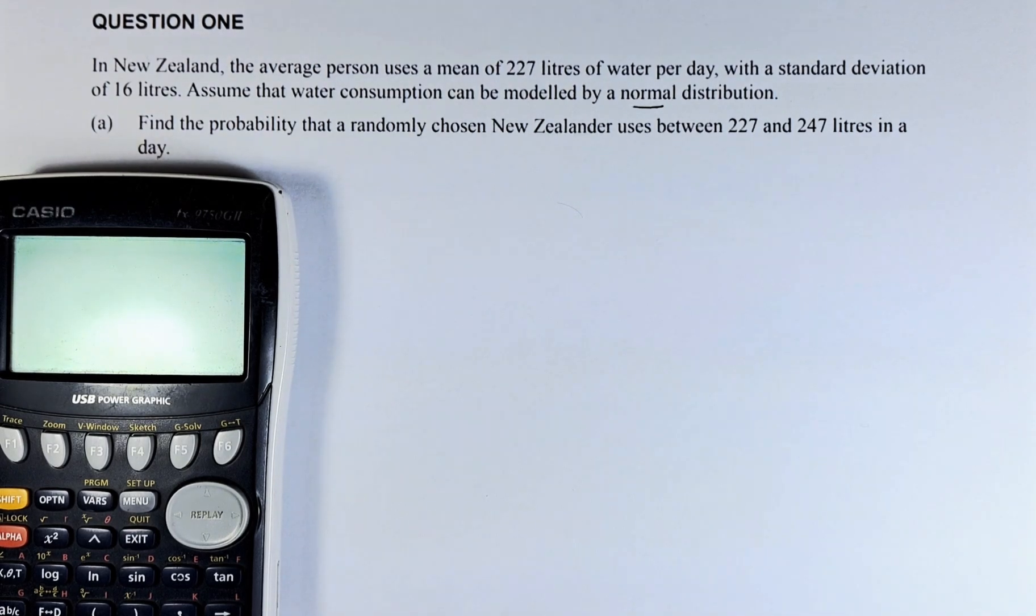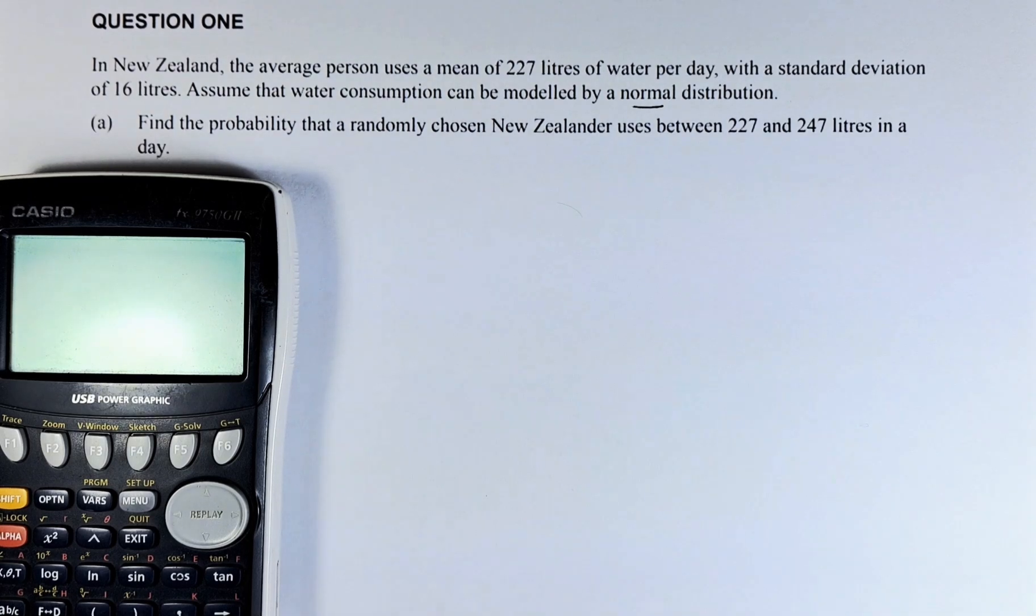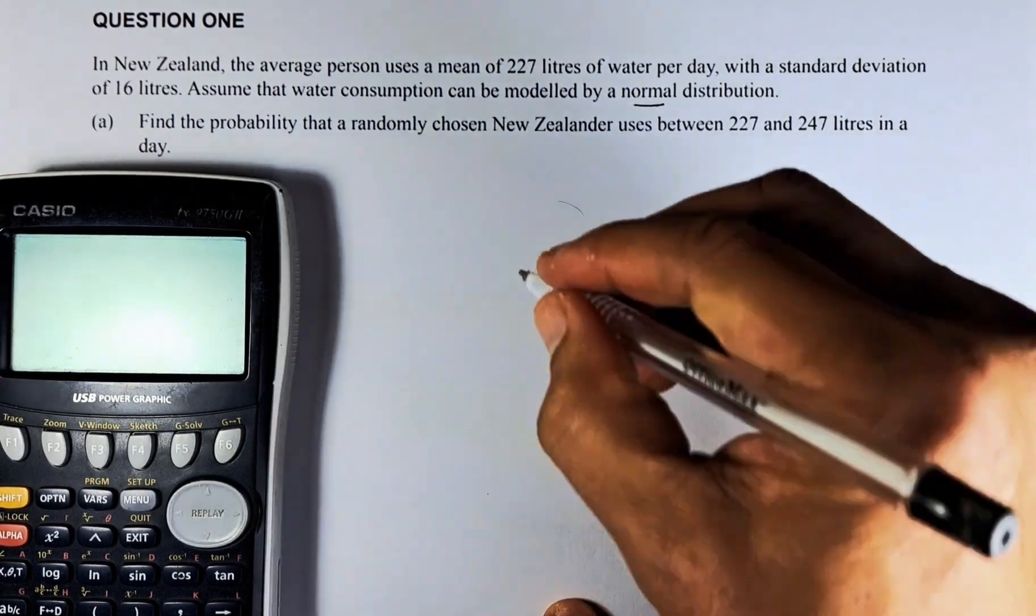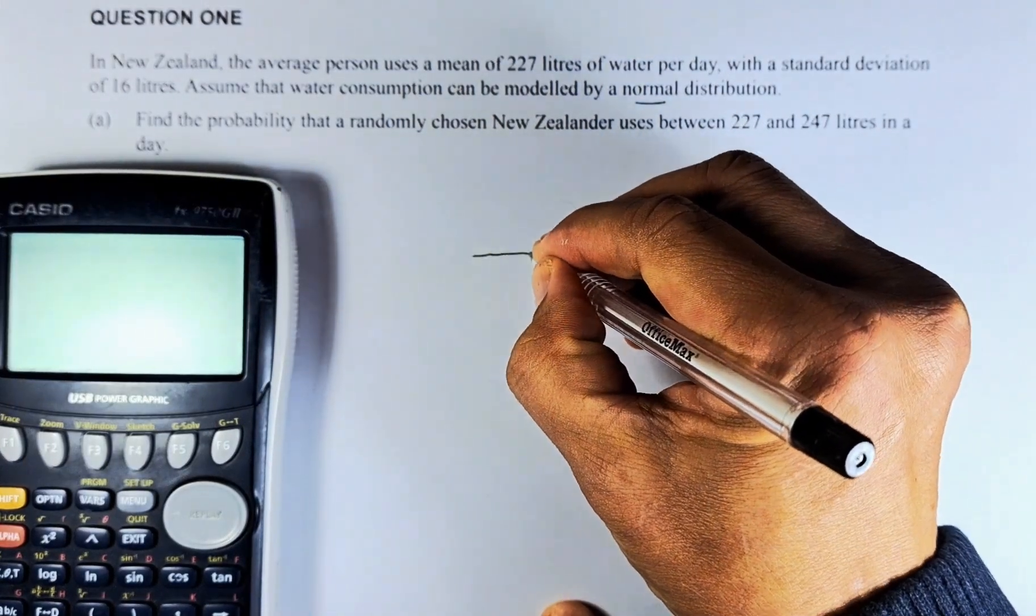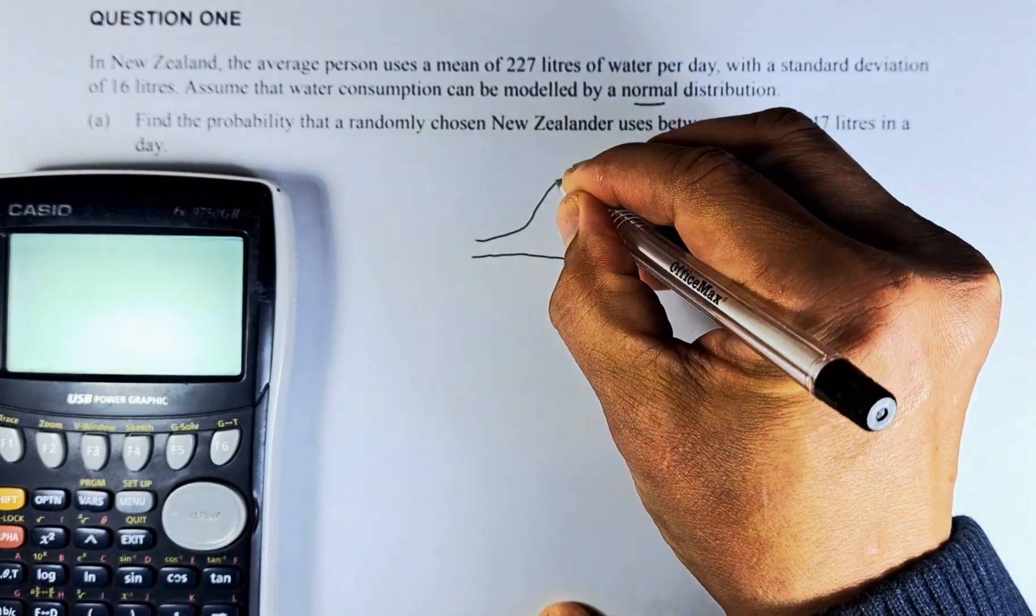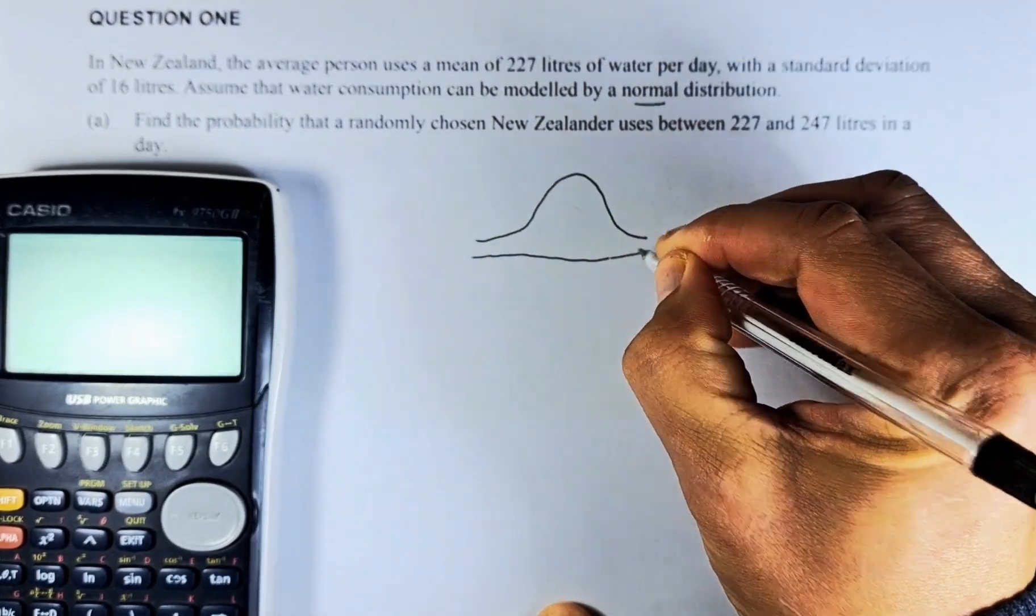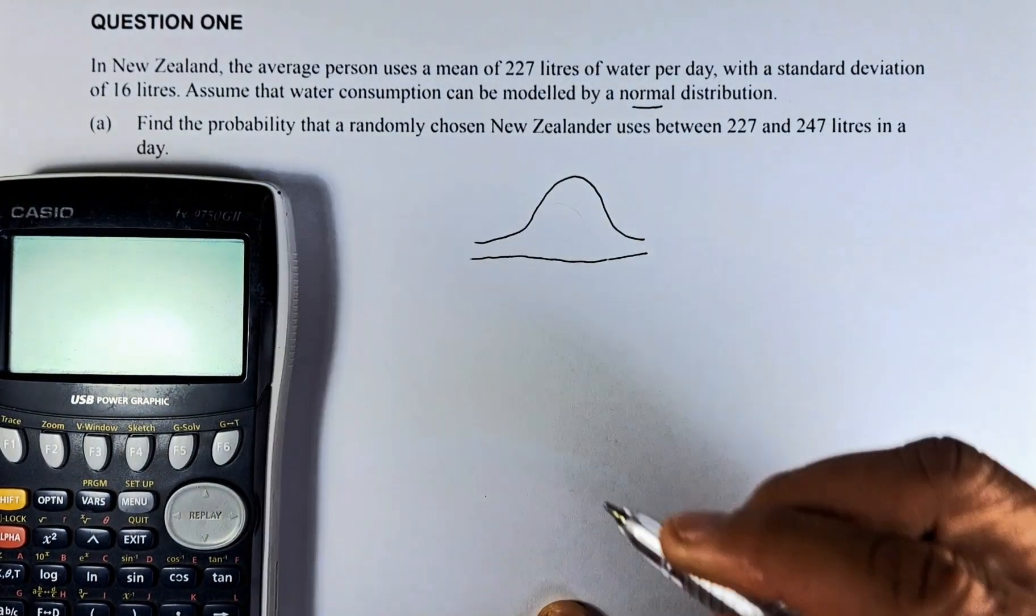Without further ado, let's try to solve this. In any normal distribution, we have to draw the graph. The normal distribution is a bell-shaped graph. So we are going to draw the graph now, a sketch will do. This is a normal distribution, and the mean is found in the middle of the graph.